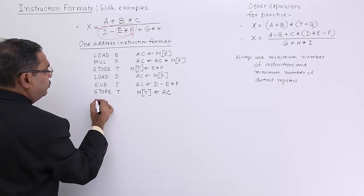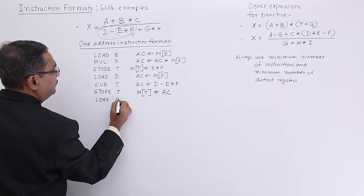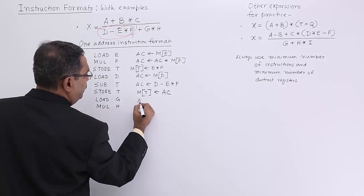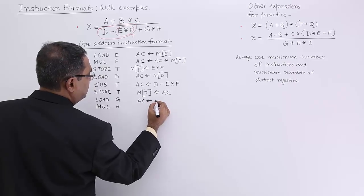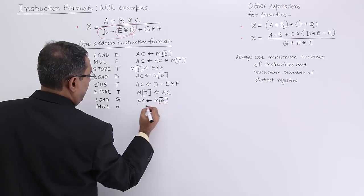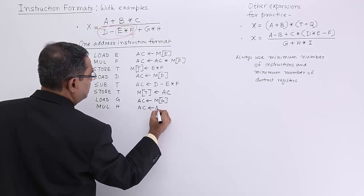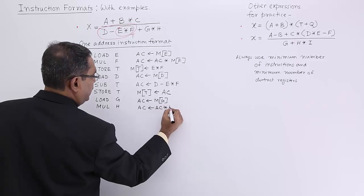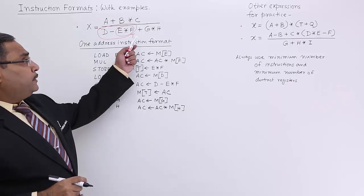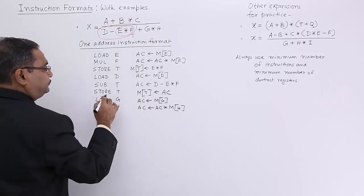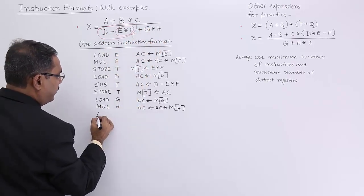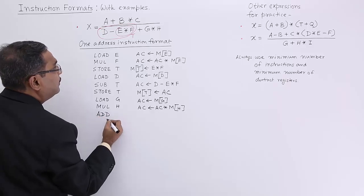Now the accumulator has been initialized with G, and then the accumulator is getting initialized with the accumulator's content multiplied by the memory content for variable H. We are having everything in the accumulator. Now go for ADD t.